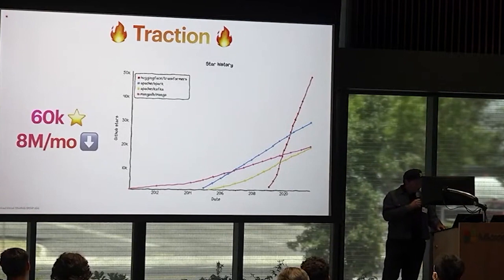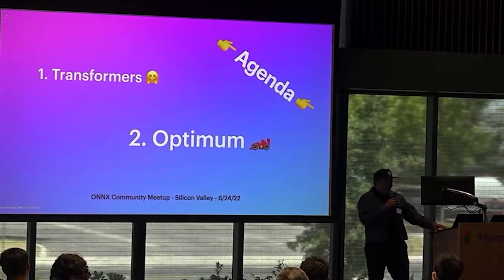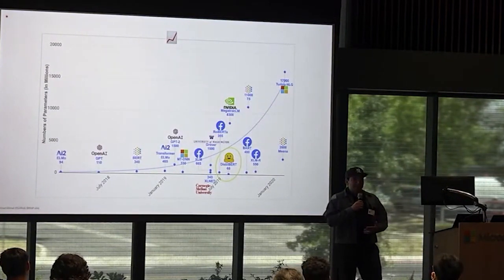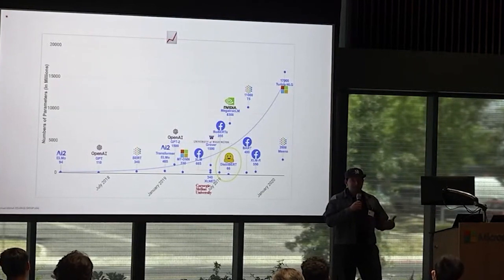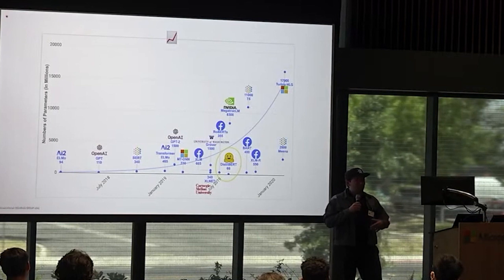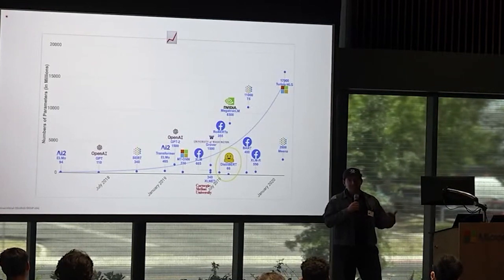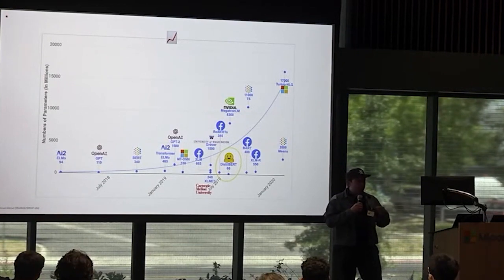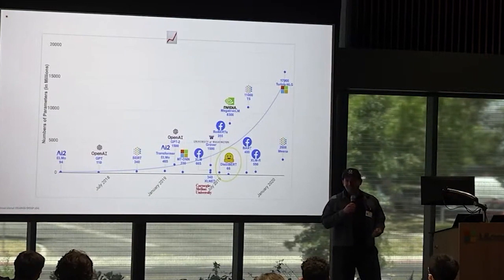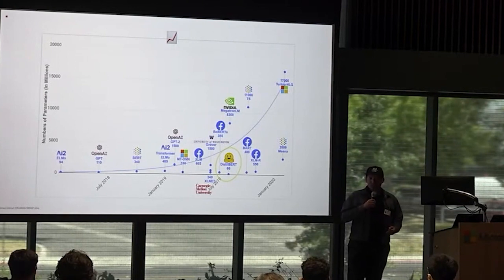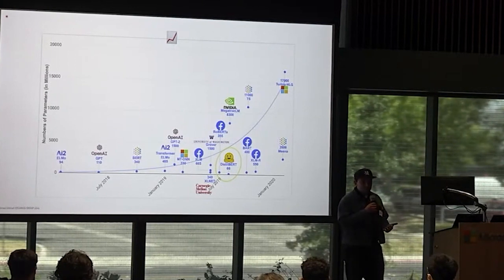Now, why Optimum? Whenever I talk about the history of Hugging Face, I show this graph — a prehistoric graph that predates GPT-3 — but even then the trend was clear: an exponential increase in the number of model parameters, making it more challenging for engineers to use those models in production because they're getting hungrier in terms of compute, memory, and bandwidth resources, creating a real struggle for infrastructure teams.